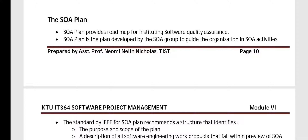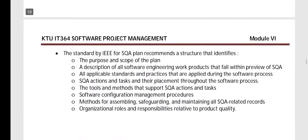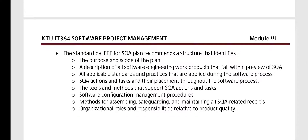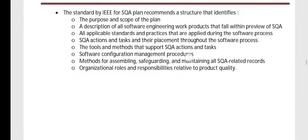The IEEE standard for the SQA plan recommends a structure that should identify the purpose and scope of the plan, the description of software engineering work products that fall within the limits of SQA, SQA actions and tasks, tools and methods for SQA, and SCM procedures pertaining to SQA.